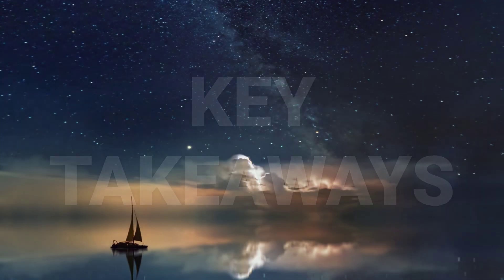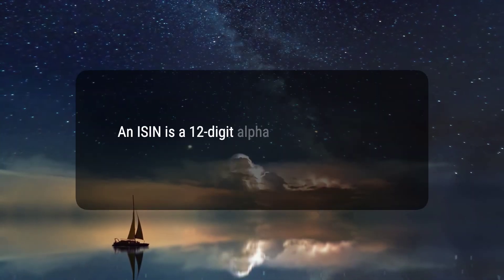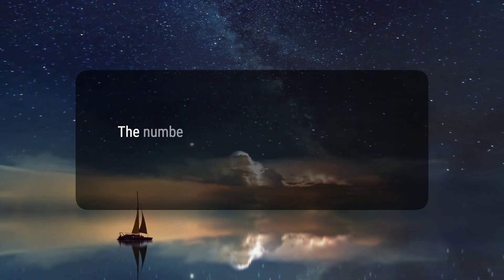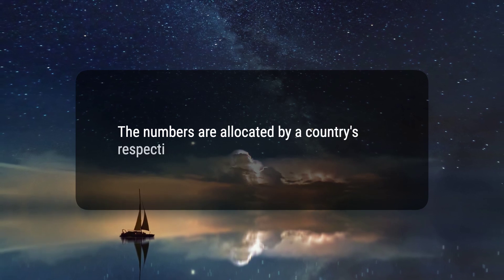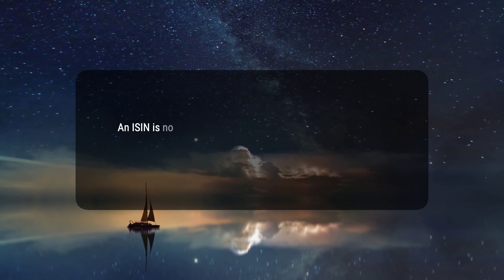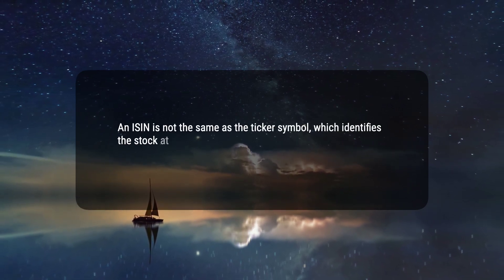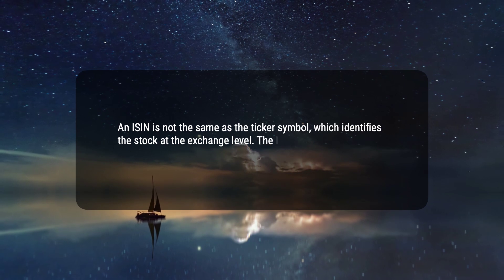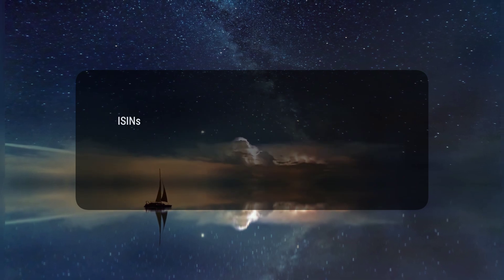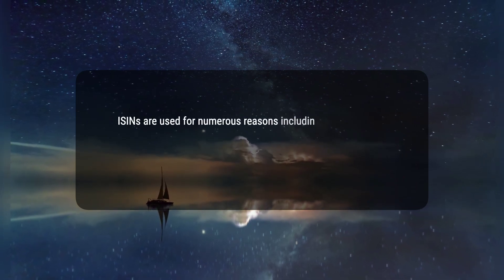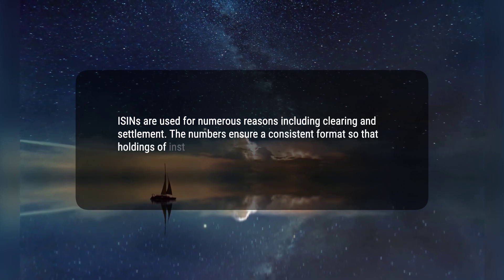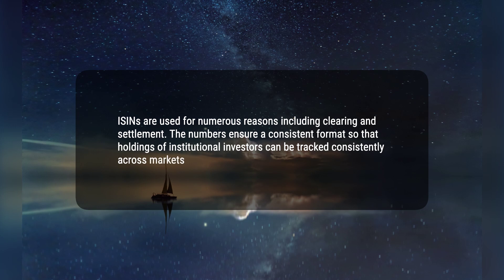Here are four key takeaways. 1. An ISIN is a 12-digit alphanumeric code that uniquely identifies a specific security. 2. The numbers are allocated by a country's respective National Numbering Agency, NNA. 3. An ISIN is not the same as the ticker symbol, which identifies the stock at the exchange level. The ISIN is a unique number assigned to a security that is universally recognizable. 4. ISINs are used for numerous reasons including clearing and settlement. The numbers ensure a consistent format so that holdings of institutional investors can be tracked consistently across markets worldwide.